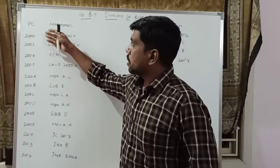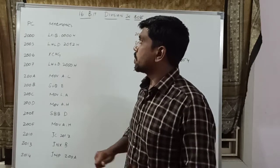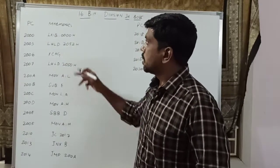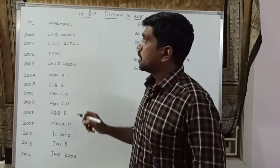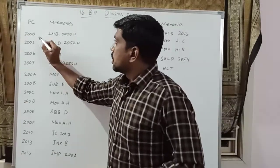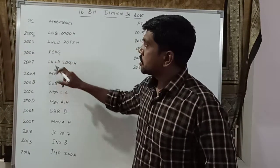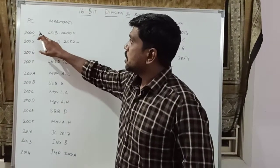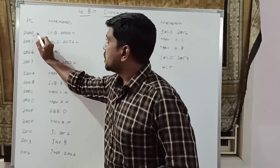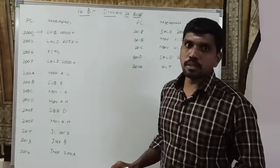Before writing the program, first we split into two columns. The first column represents the program counter value, and the second column represents the mnemonics. The origin of the program we start with 2000H, so 2000H is the program counter value. In this memory location, it points to some instruction.